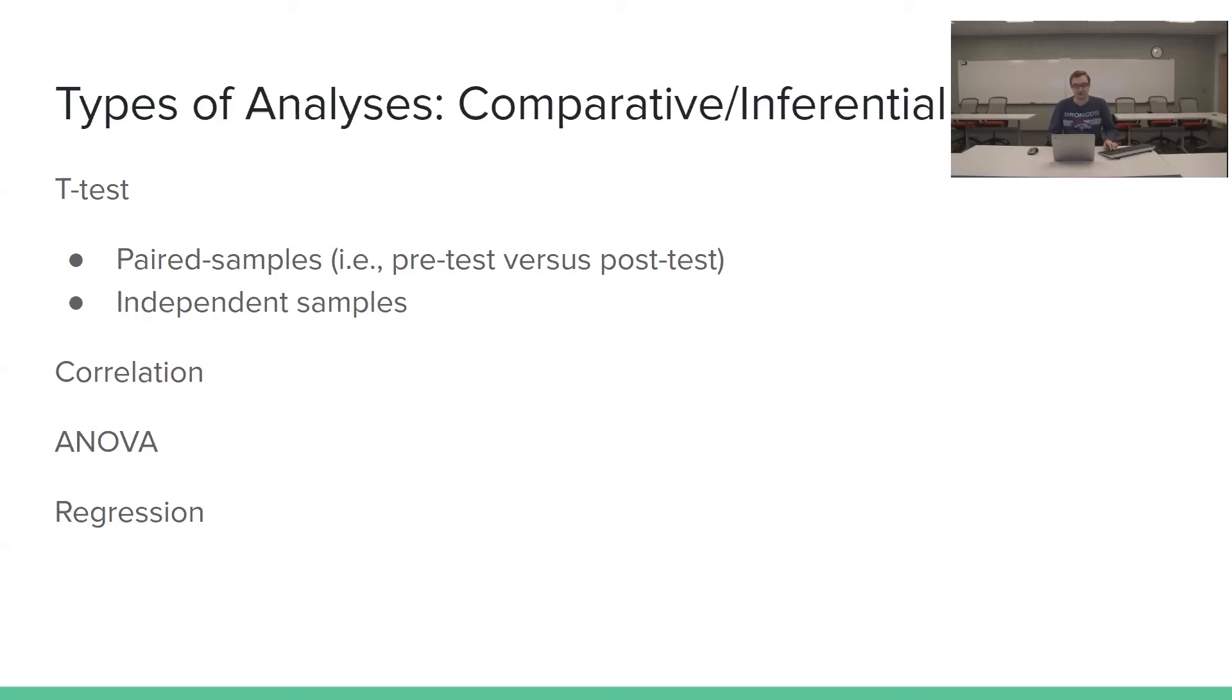Finally, we have regression. And this is used to estimate the relationship between a continuous DV and one or more continuous independent variables. And ultimately, this is used to create a predictive model of the dependent variable based on the independent variable.